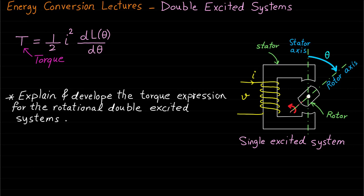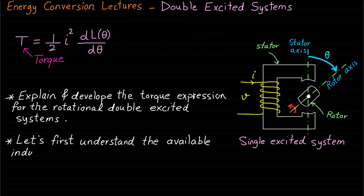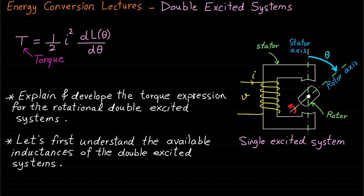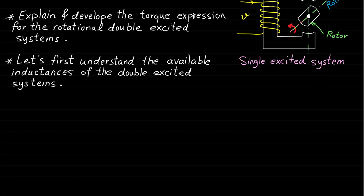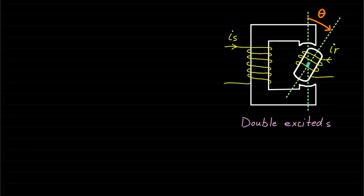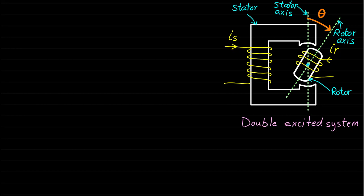Since the change of inductance is an important factor in developing the torque, let's first understand the available inductances of the double excited systems and how these inductances vary with respect to rotor position. Assume we have the following rotational double excited system. As we can see, this system consists of stator and rotor and two excitation coils. Since this magnetic circuit or system has two coils, then this system will have three main inductances.